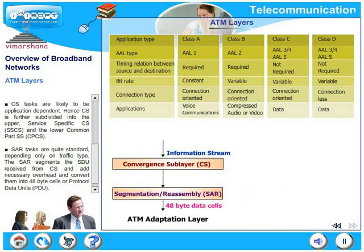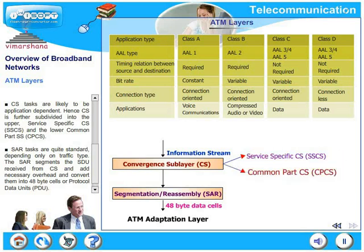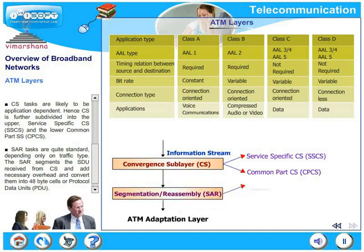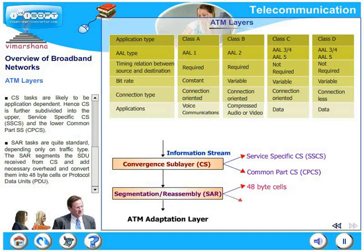CS tasks are likely to be application dependent; hence, CS is further subdivided into the upper service specific CS, SSCS, and the lower common part CS, CPCS. SAR tasks are quite standard, depending only on traffic type. The SAR segments the SDU received from CS, adds necessary overhead, and converts them into 48-byte cells, or protocol data units PDU.